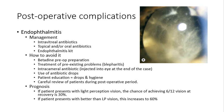Regarding prognosis: if a patient presents with only light perception vision, the chance of recovering 6/12 vision is only 30%; if they present with better than light perception, this increases to 60%. Endophthalmitis is therefore vision-threatening and extremely important to watch for. This concludes part two, which has covered the step-by-step surgical process, post-operative care, and operative and post-operative complications.